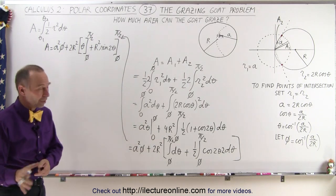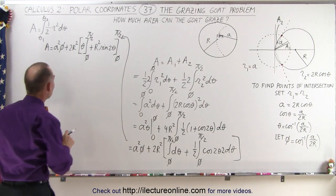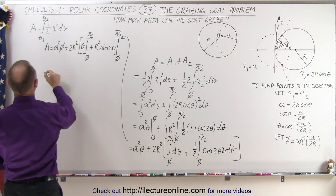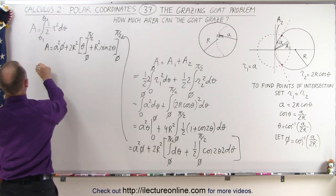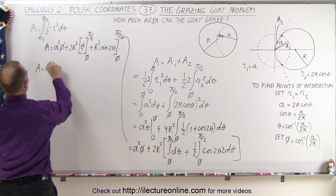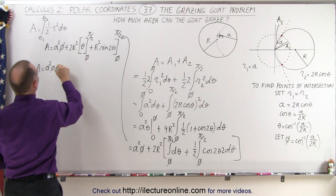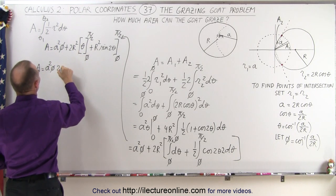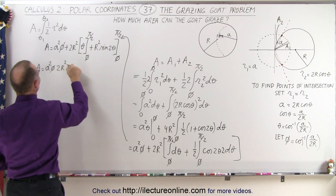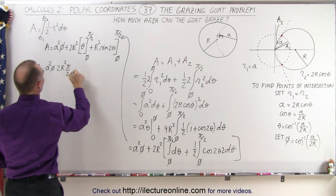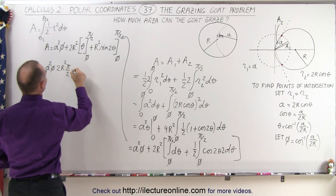So now all we have to do is plug in our limits and see what we end up with. The area is equal to A squared times φ. Plugging in the upper limit gives 2R squared times π/2; plugging in the lower limit...